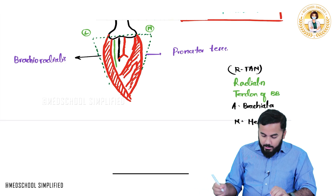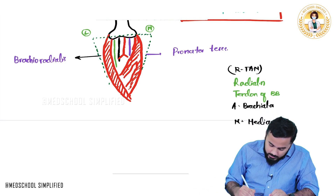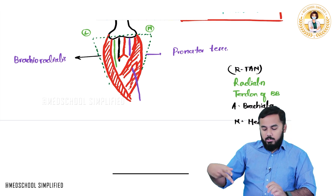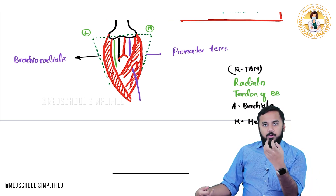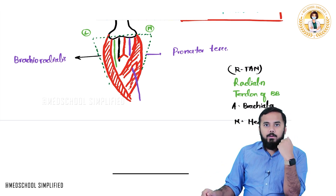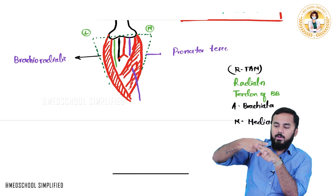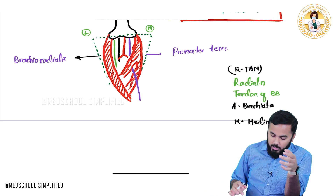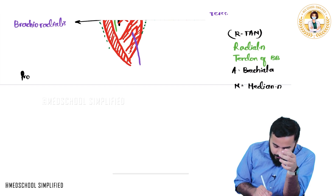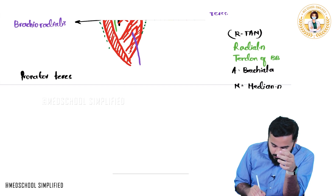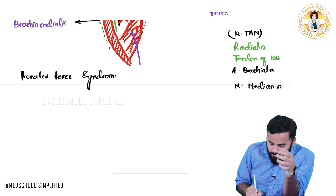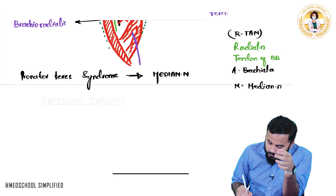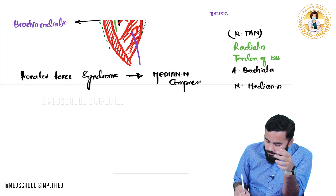One important thing: the median nerve passes in between the heads of the pronator teres. Whenever there is compression of the pronator teres, it leads to compression of the median nerve, because the median nerve is passing through it. When the pronator teres contracts, there will be compression of the median nerve. This condition is called pronator teres syndrome, which involves median nerve compression.